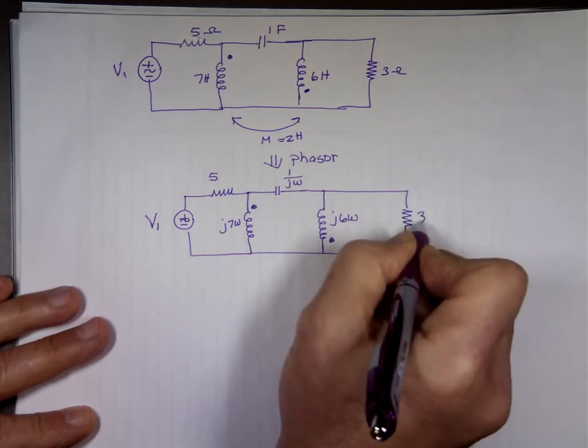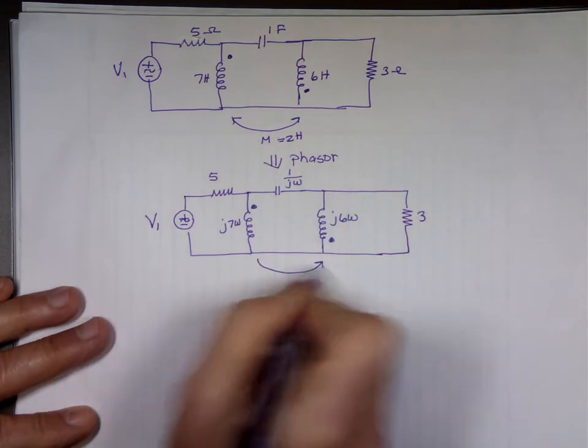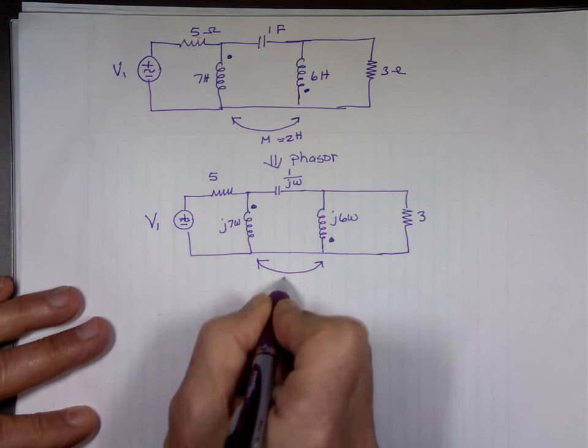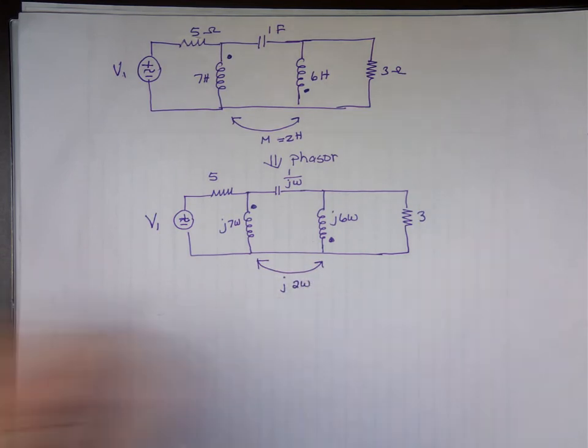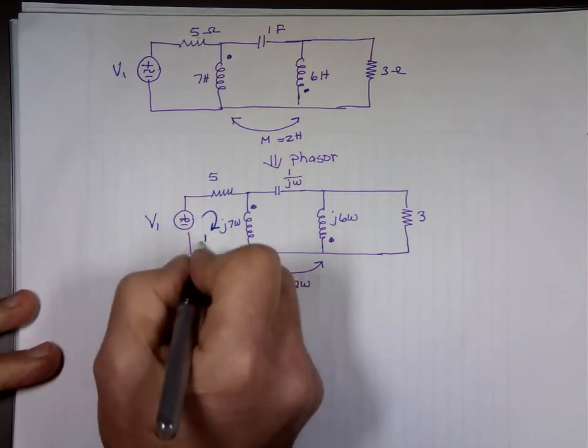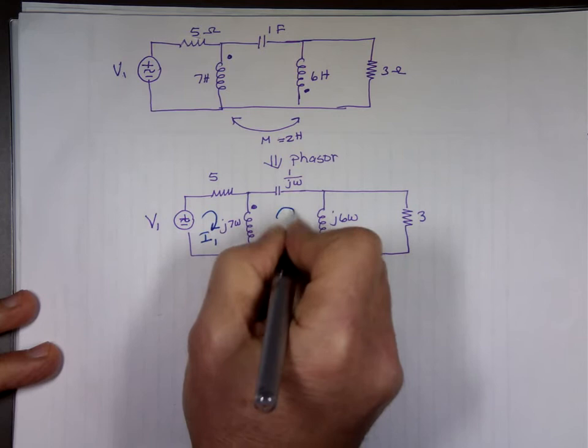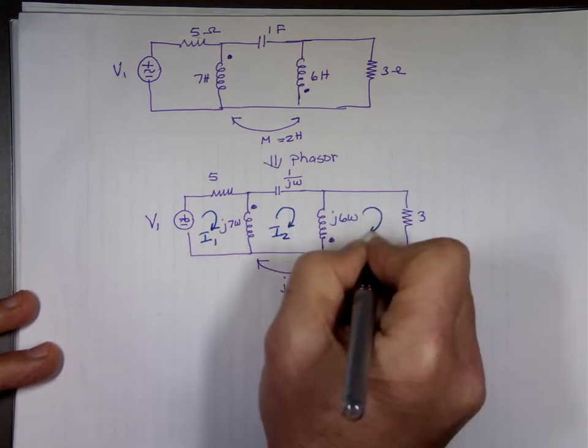The only thing I left are the mutual inductance which is 2 Henry. So the mutual inductance jωL is j2ω. Again just like the previous one I'll probably do three equations here. This is I sub 1, this is I sub 2, and this is I sub 3.